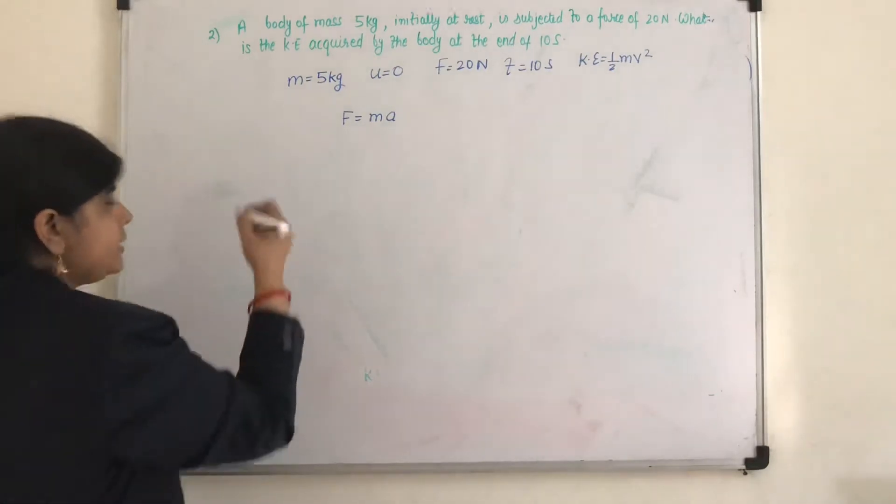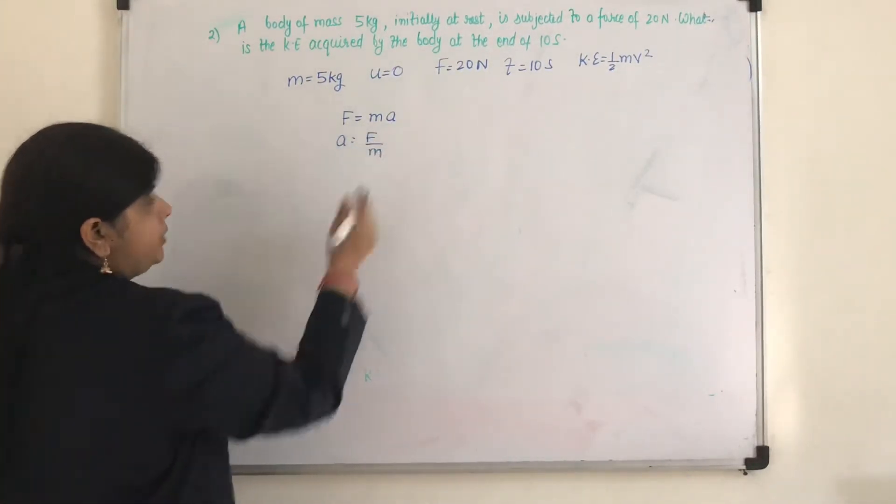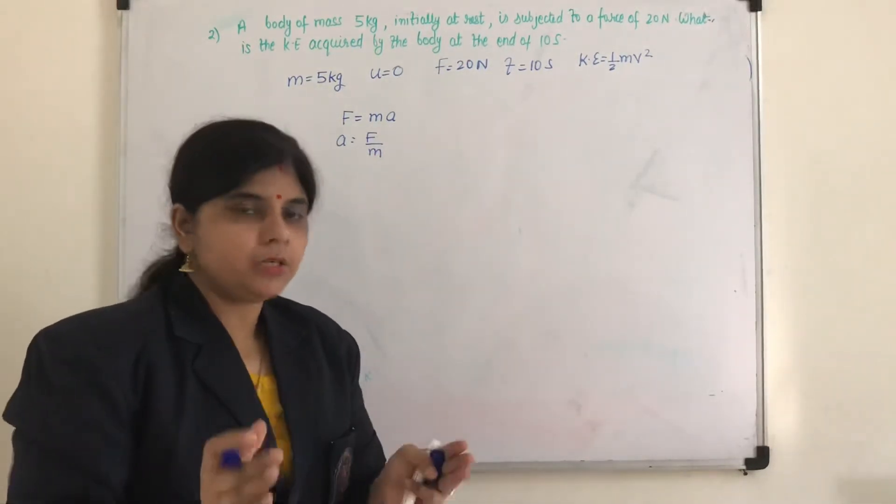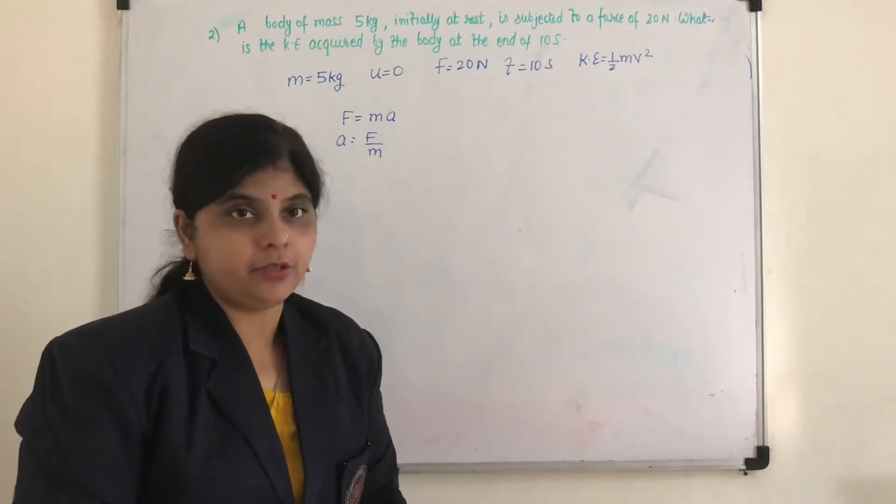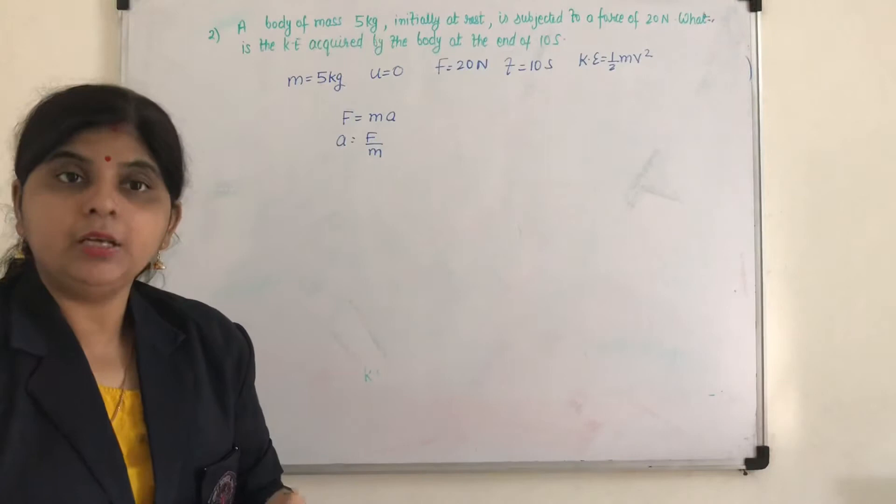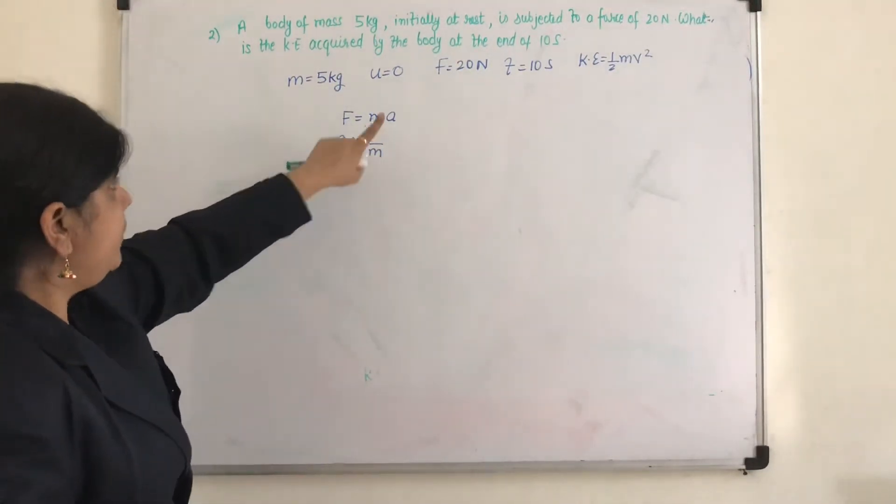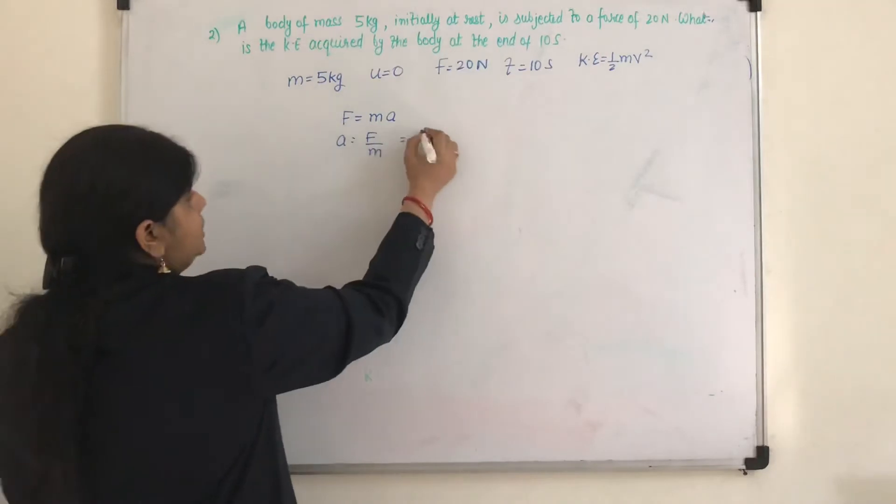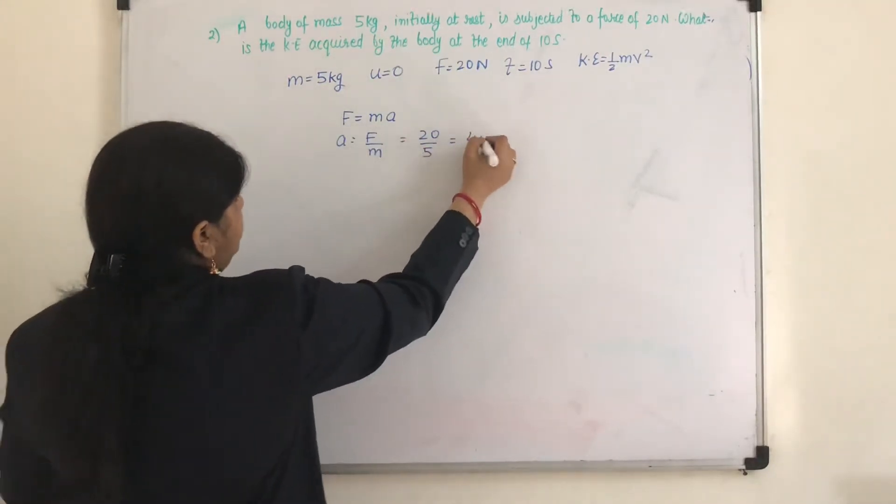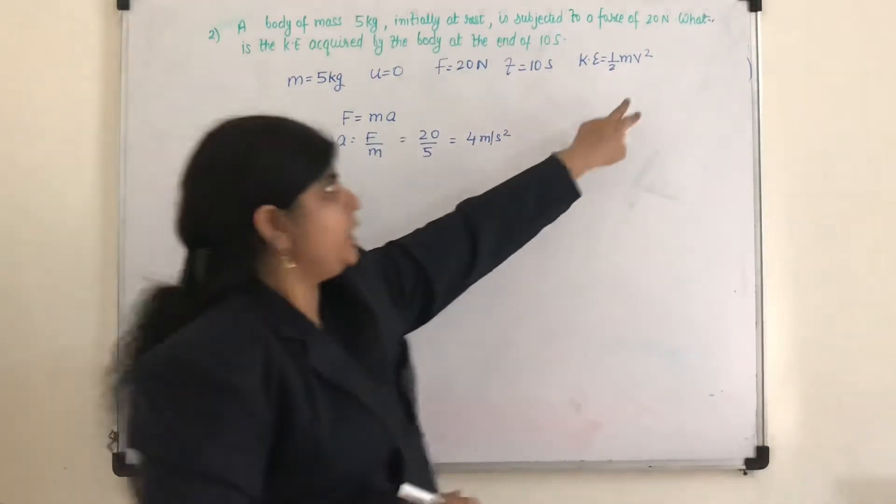So how should I do it? You know the equation F is equal to m into a. So acceleration will be equal to f upon m. Because the body is starting from rest and it is acquiring certain velocity, so definitely it will have certain acceleration a. So we need to calculate how much the body has been accelerated. So acceleration will be f upon m. F is 20 upon m is 5. So it is 4 meter per second square.